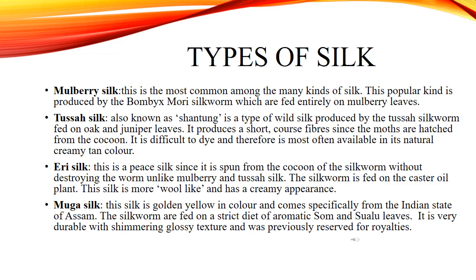Muga Silk: This silk is golden yellow in color and comes specifically from the Indian state of Assam. The silkworm are fed on a strict diet of aromatic sum and sualoe leaves. It is very durable with a shimmering glossy texture and was previously reserved for royalty.